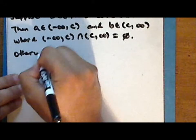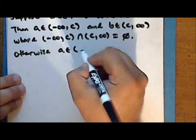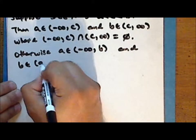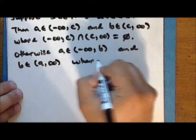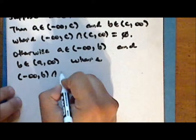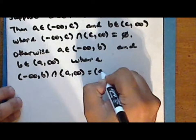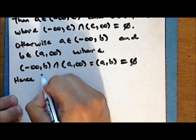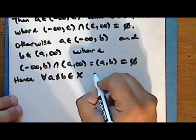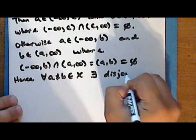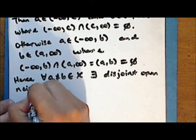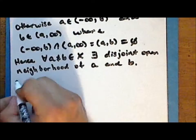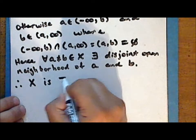Otherwise, the element a is in the open ray from negative infinity to b, and the element b is in the open ray from a to positive infinity, where the intersection of these two rays is the open interval from a to b, which is empty as there are no elements between a and b. So in either case, for every pair of distinct elements a and b in the underlying set X, there exist disjoint open neighborhoods of a and b. Therefore, the space X is T2, or Hausdorff.